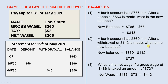Number 2: A bank account has $869 in it. After a withdrawal of $142 is made, what is the new balance? Because it's a withdrawal, we subtract this amount from the balance. So the new balance is $869 minus $142, which is $727.